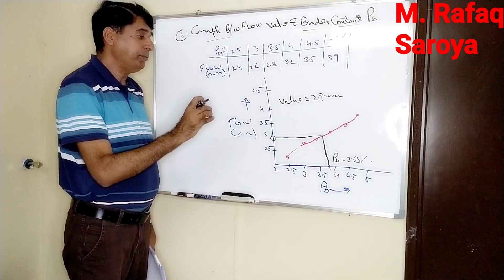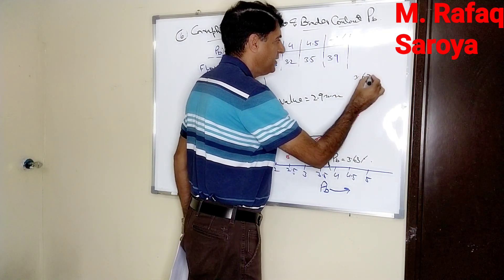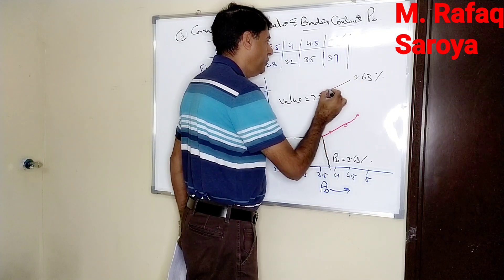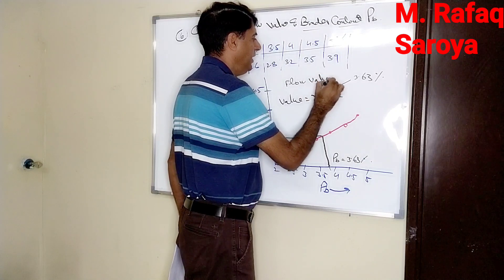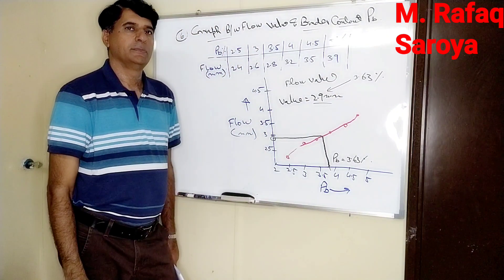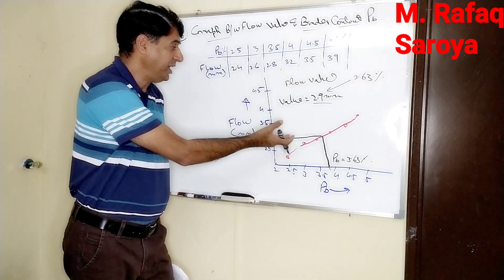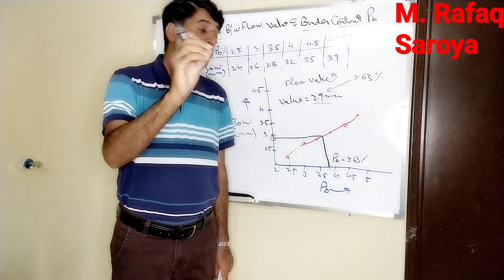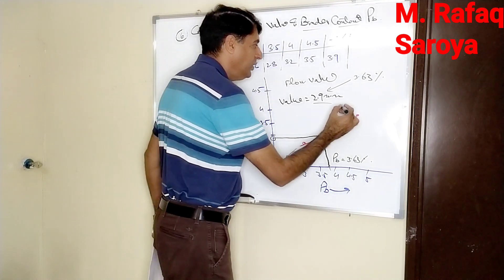Now we have to check the condition, because this is the value taken from the graph. With the binder content limit of 3.63%, the amount of flow value comes out to be 2.9 mm. With reference to this binder content, we have to check the condition.